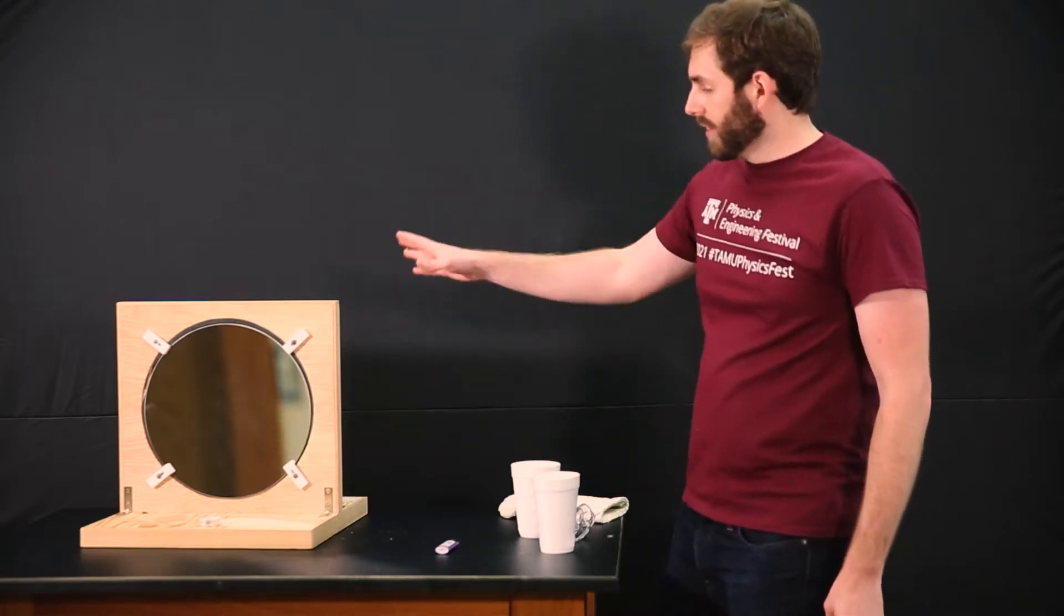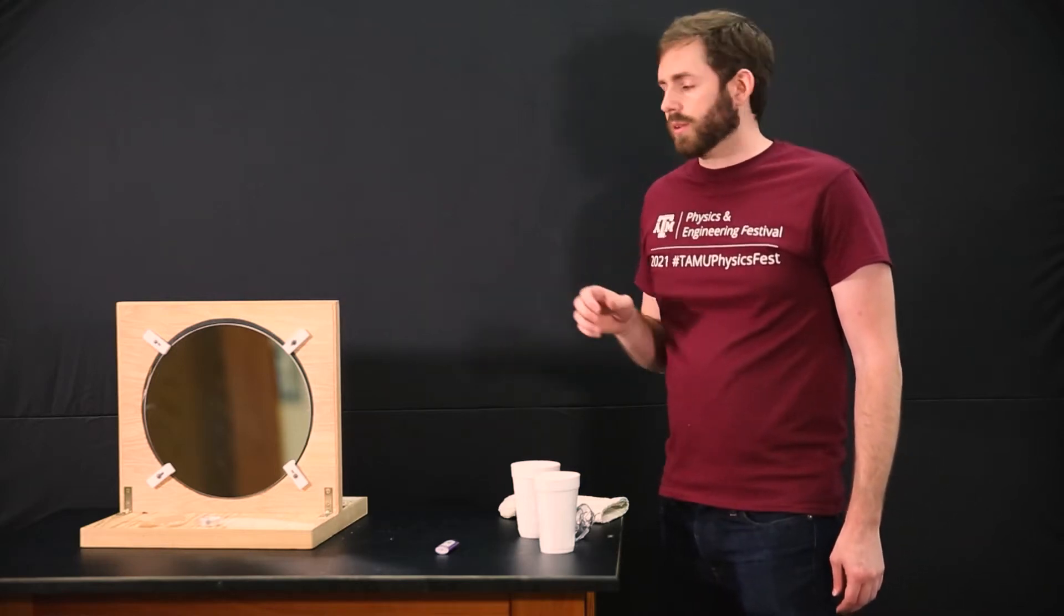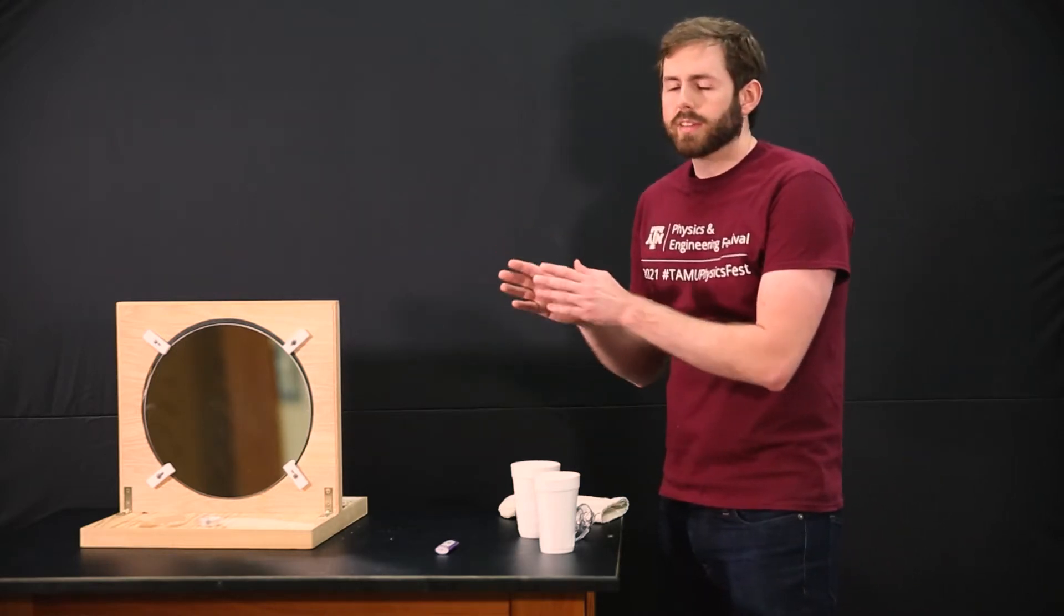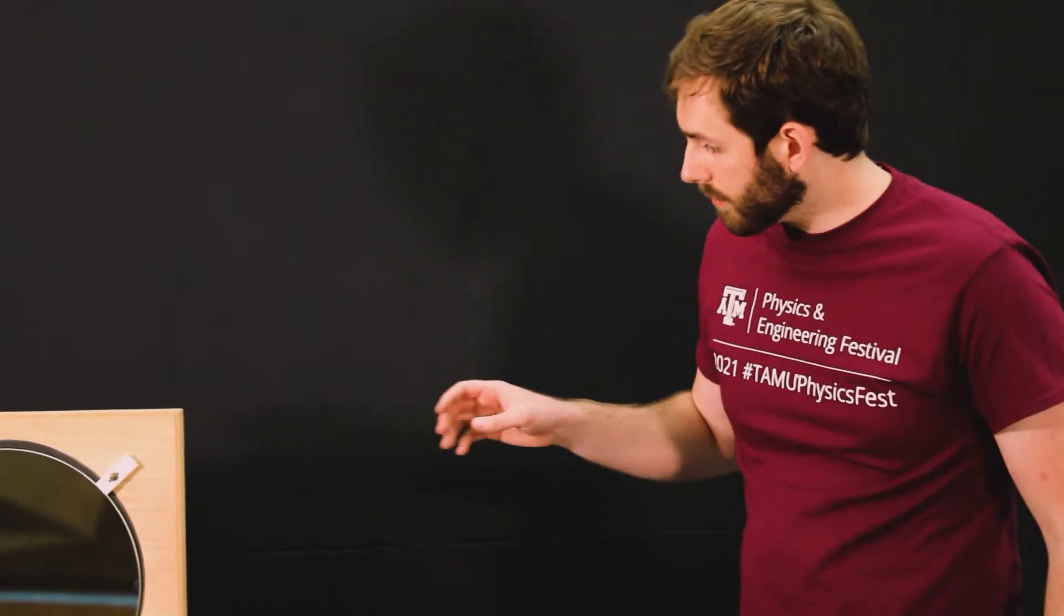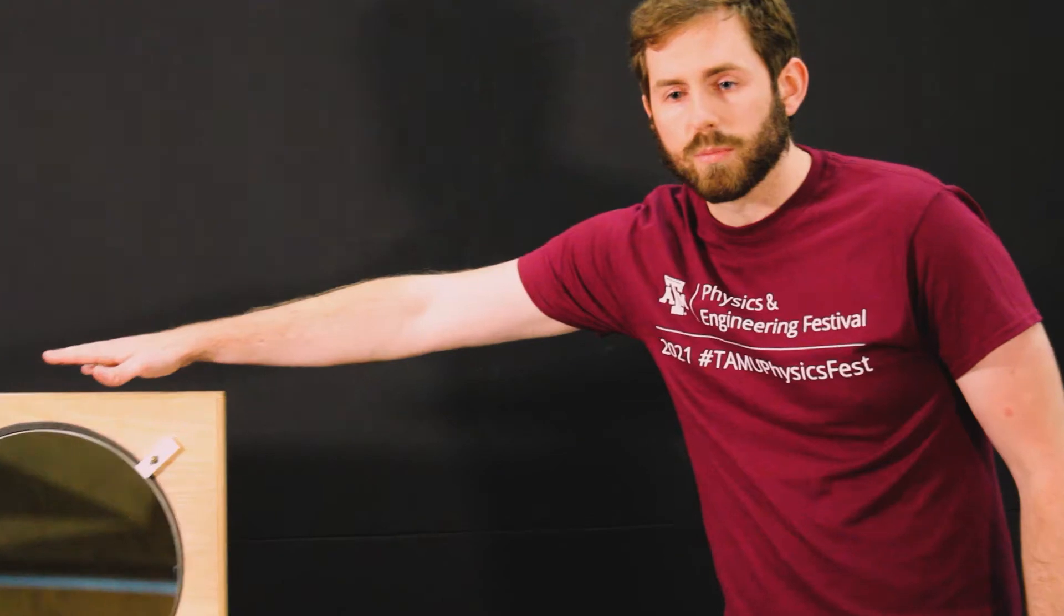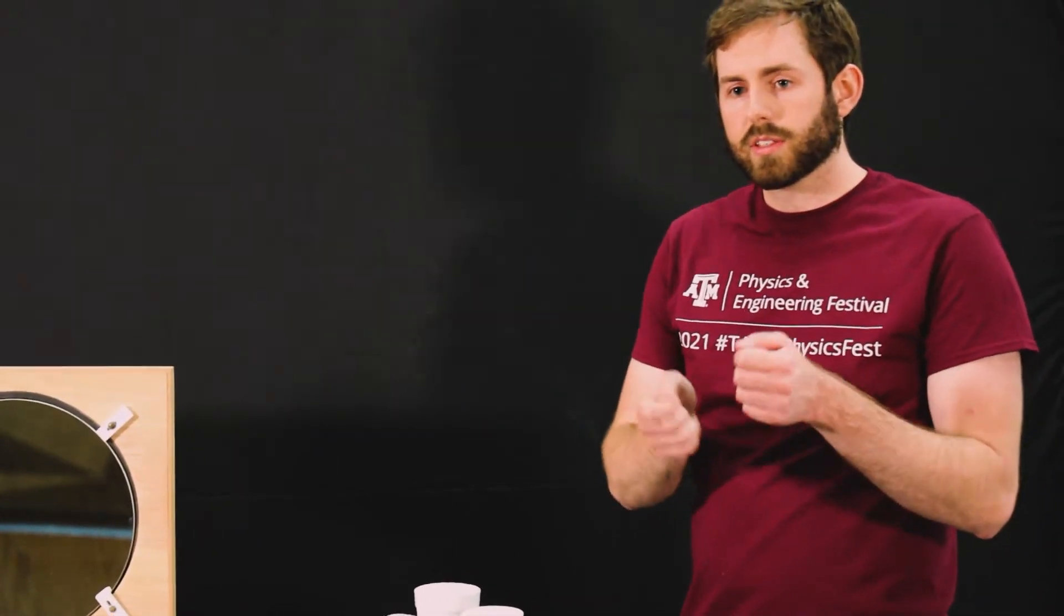However, with this demo, we can really accentuate that. This is a Schlieren optics demo. It's designed to emphasize every little change in how air refracts light. We have here a parabolic 13-inch telescope mirror, and on the other side we have a camera with a knife-edge filter and a pinhole light. That allows us to visualize changes in the air.